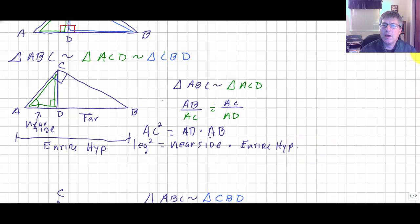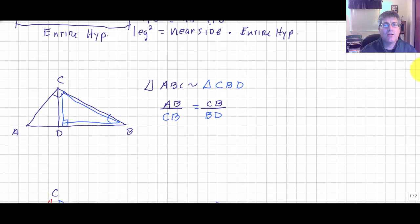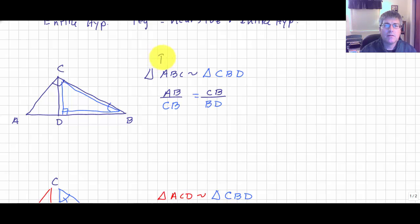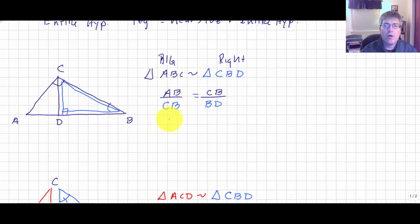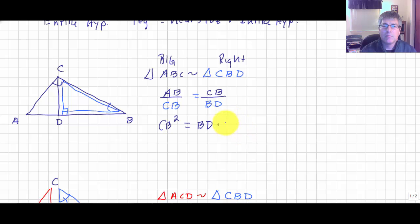That's one altitude on hypotenuse theorem. Now let's take a look at the big triangle and the similar triangle on the right-hand side. Using the correspondence, AB is to CB as CB is to BD. Using the means and extremes product theorem, CB squared equals DB times AB.